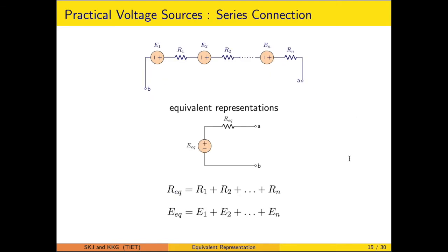For practical voltage sources in series: each is represented by an ideal source and a series internal resistance. Correlating with the previous discussion, the source voltages add to give Eeq, and all internal resistances are in series to give Req, forming a simplified two-terminal series equivalent.